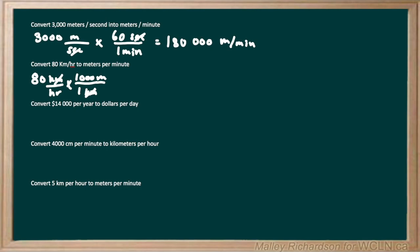Now we're left with meters per hour but we need meters per minute. So we need to get rid of the hour by multiplying by the ratio between minutes and hours. We know there are 60 minutes per hour, so we write one hour on the numerator and 60 minutes on the denominator. This hour cancels out, and we're left with 80 times 1,000 divided by 60, which gives us 1,333.33 meters per minute.